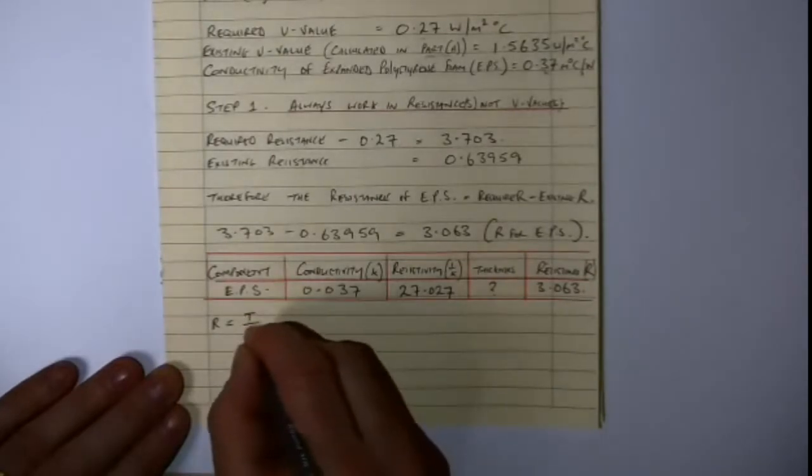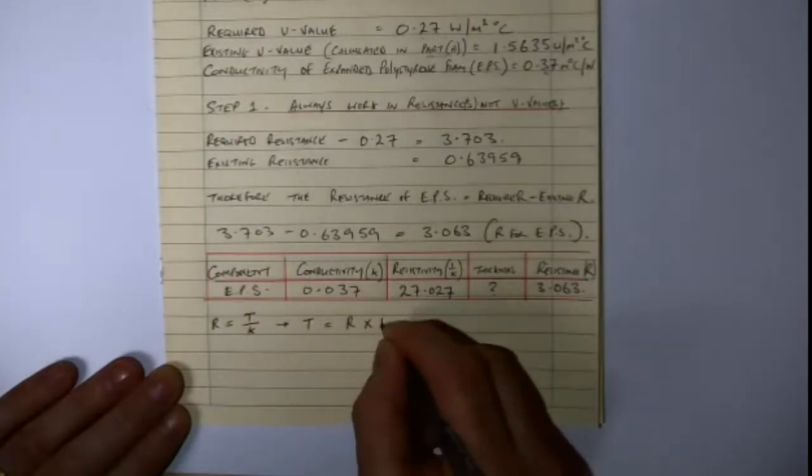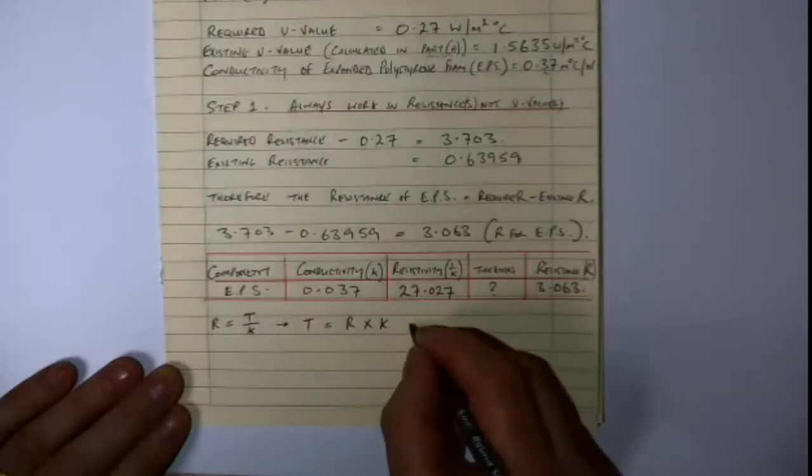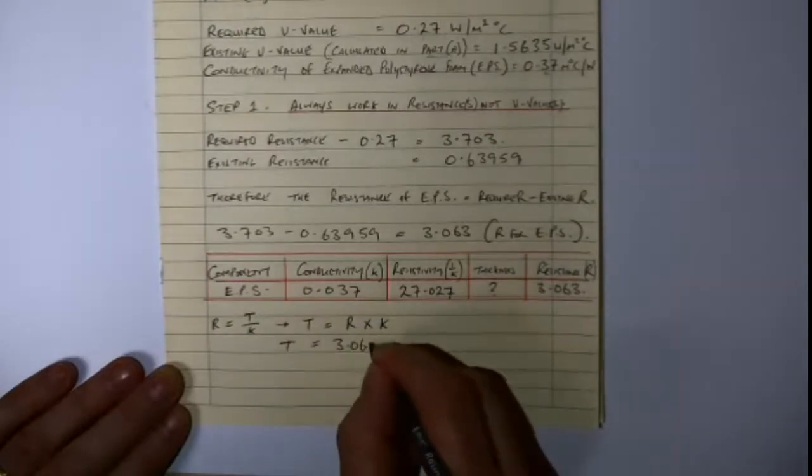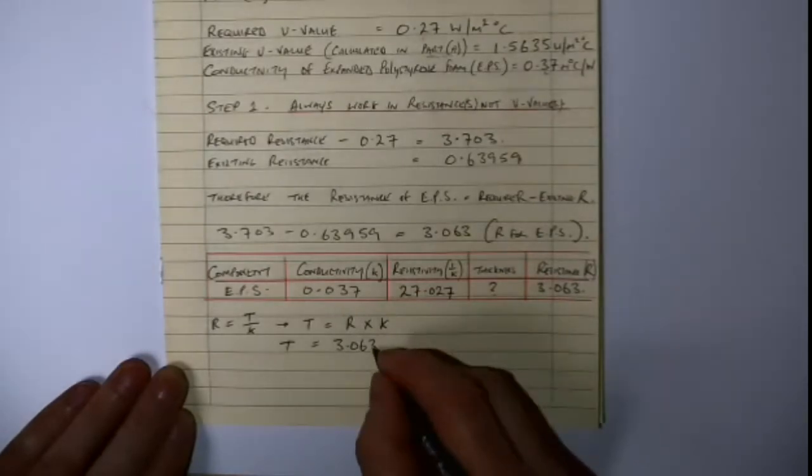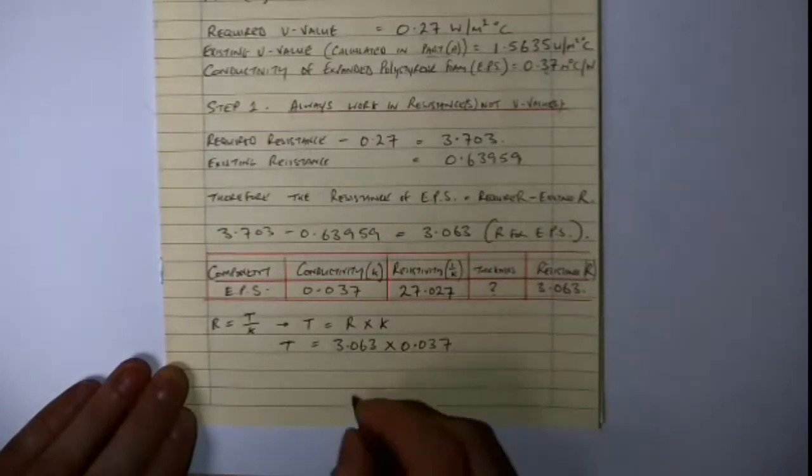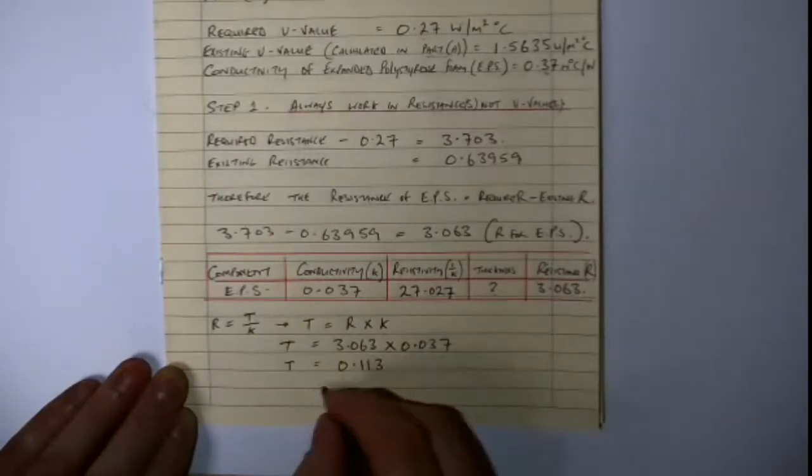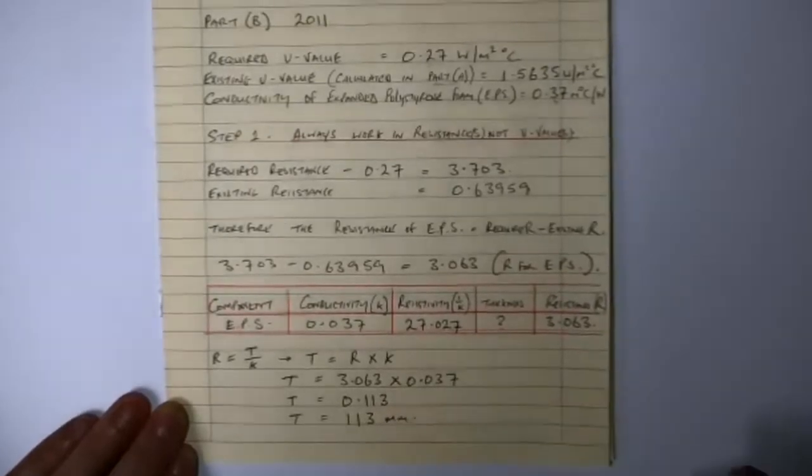So what we can do here is we can go by having the resistance as equal to the thickness over the conductivity, or we can go with the thickness as equals the resistance multiplied by conductivity. So if the thickness is the resistance, which we have, we know the conductivity is 0.037, and we multiply these out, it will give us our thickness, which the unit of measurement is in meters. So that's 0.113 meters, so that means it's 113 millimeters of insulation.